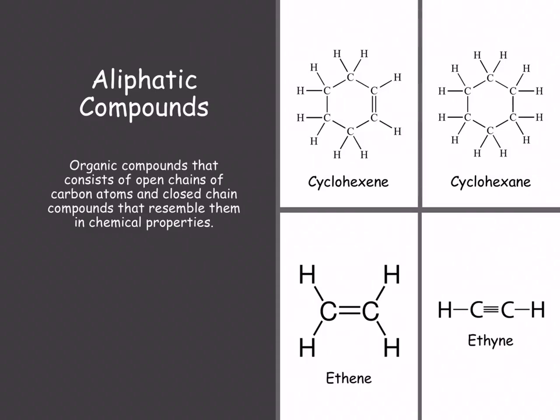Cyclohexane and cyclohexene. The hexene is on the left top with the double bond and cyclohexane on the right. Note the lack of double bonds. So these open and closed-chain compounds have similar chemical properties.